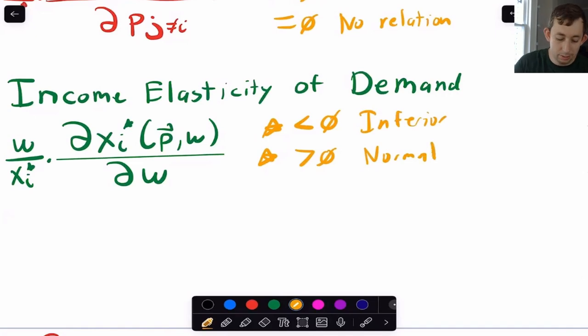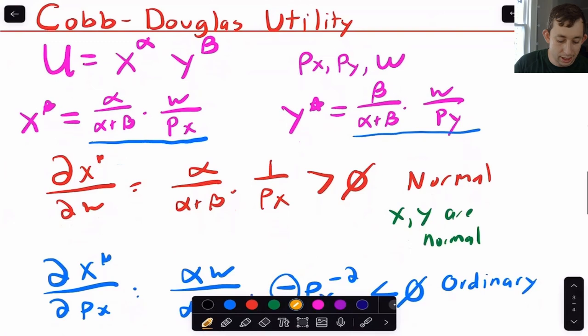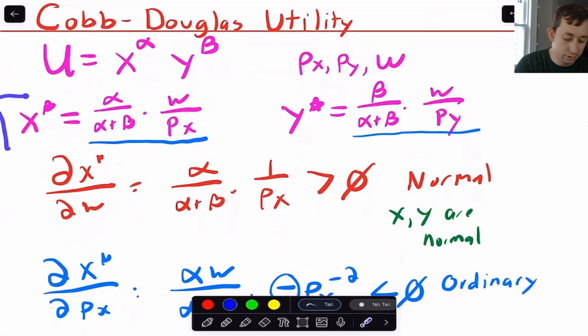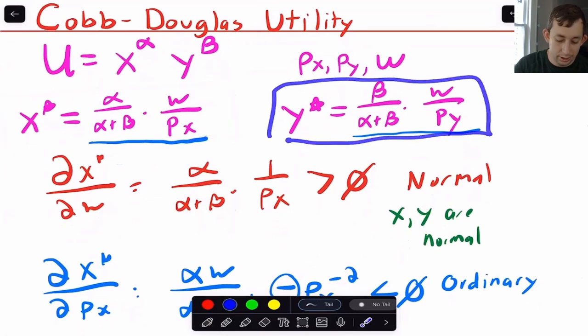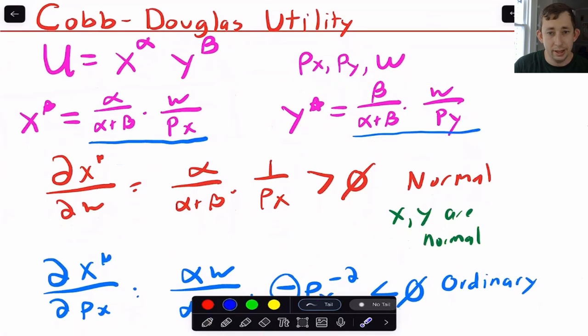Alright, so let's go ahead and get into it. We sort of know what's happening. Let's do an example with Cobb-Douglas utility. When I do this example with Cobb-Douglas utility, again, I can use this shortcut where x star is just this and y star is just this. Again, I talked about that in a separate video.